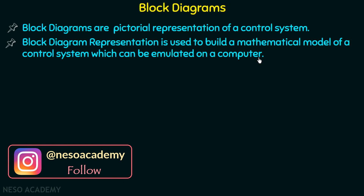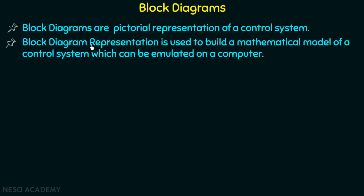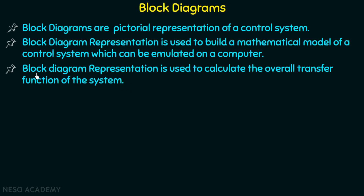Nowadays, systems are analyzed on computers by the use of software. In that case, block diagram representation plays an important role because it can help to build a mathematical model of a control system. Moving on to point number three: block diagram representation is used to calculate the overall transfer function of the system. To find out the output with respect to any given input, we need the transfer function of the system, and block diagram representation helps to find that.